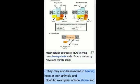In general, harmful effects of reactive oxygen species on the cell are most often: damage of DNA, oxidations of polyunsaturated fatty acids and lipids (lipid peroxidation), oxidations of amino acids in proteins oxidatively inactivate specific enzymes by oxidation of cofactors.